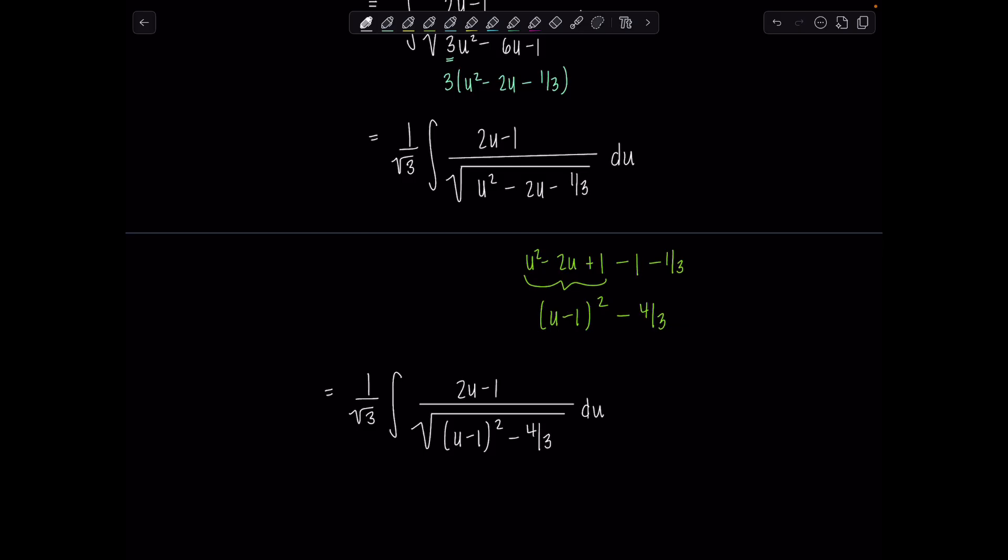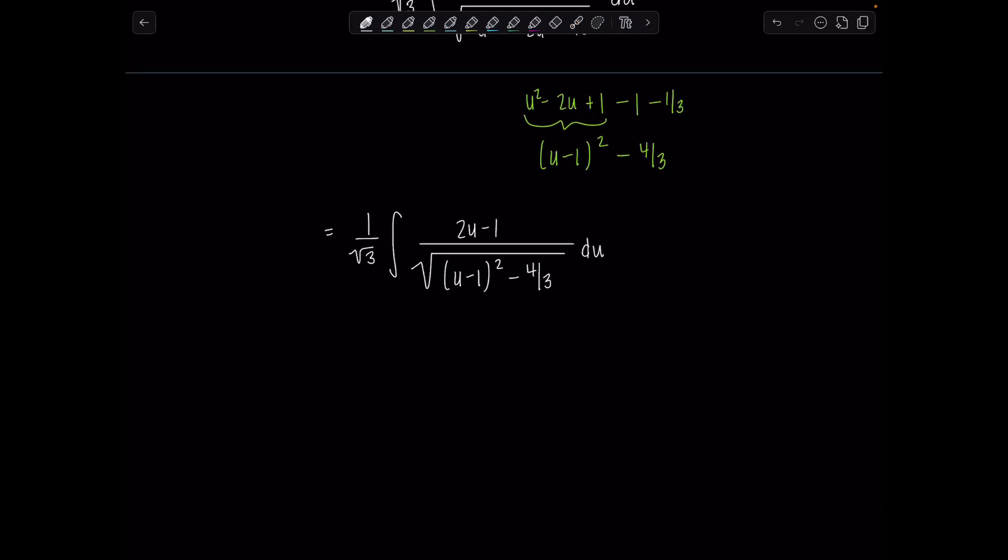Now from here, I'm going to split this into two integrals. Why am I doing that? Well, notice this expression underneath the radical is a quadratic expression, quadratic function of u. And in the numerator, I have a linear function of u. So I can use a substitution to work on part of the numerator, but it's not going to fall into place perfectly because of this constant. I'm going to have to do a trig sub most likely.